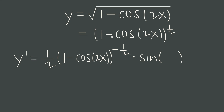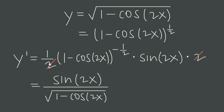Now we narrow in on the inside function: 1 minus cosine of 2x. The derivative of 1 is 0, so that goes away. The derivative of negative cosine of 2x requires another application of chain rule because cosine is the outside function and 2x is the inside function. The derivative of negative cosine is positive sine, so we get positive sine — that's the derivative of the outside — leaving the inside untouched. Then we multiply by the derivative of 2x, which is 2. We can cancel the 2 in the denominator with the 2 in the numerator, and the negative exponent moves 1 minus cosine of 2x to the denominator as a positive one-half exponent, which we rewrite as a square root. Same concept as before, but two applications of chain rule this time.